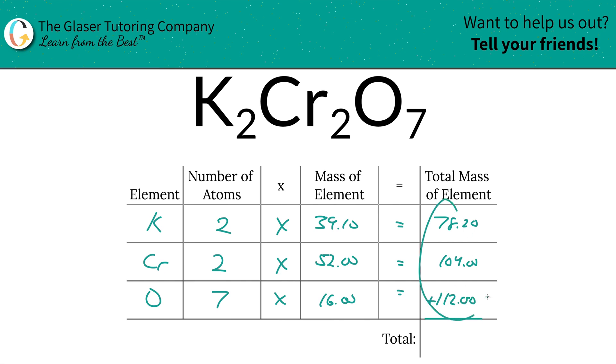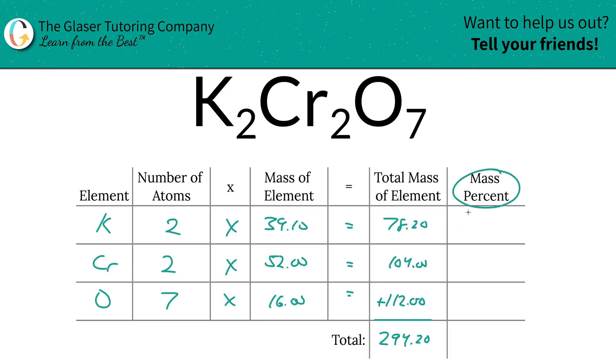Now to find the total mass of the entire compound, we simply add up this entire column together: 294.20. That's the first step of the process. Now that we found the total mass, I'm going to add a column to the table to calculate the percentages.